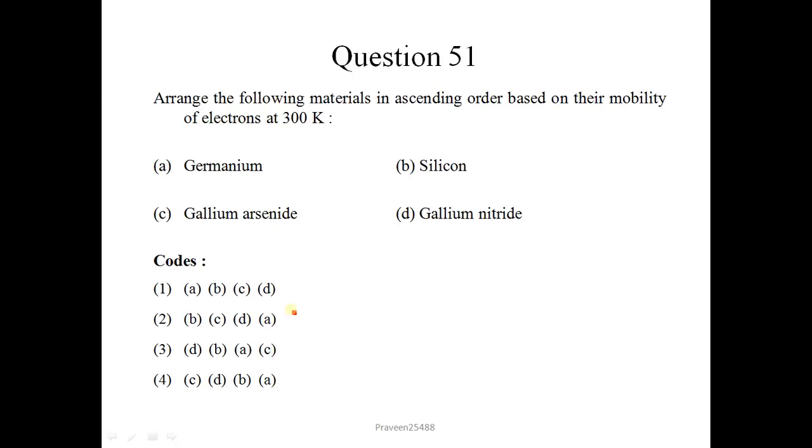Here is question number 51. Arrange the following materials in ascending order based on their mobility of electrons at 300 Kelvin. Mobility in cm² per volt second of germanium is 3900, for silicon it is 1500, for gallium arsenide it is 8500, and for gallium nitride it is 1500. You see that for silicon and gallium nitride it is same, so option which is best match is 3.